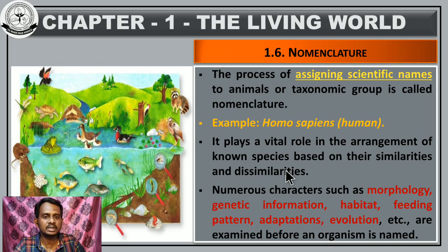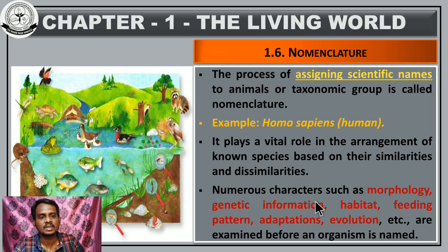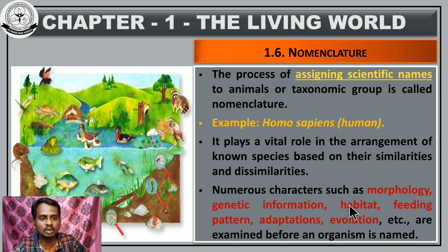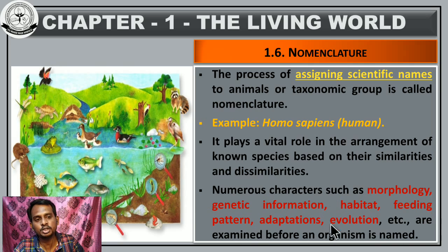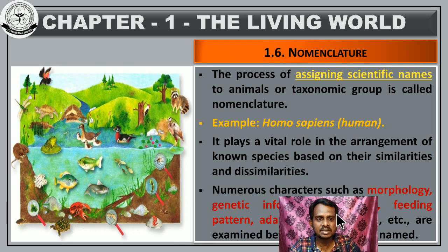What are the characteristic features that should be observed during the naming of organisms? Observe the similarities and dissimilarities, the morphological character of the organism, genetic information of that particular organism, habitat, feeding pattern, adaptation, and evolution. These are all the factors or characteristic features that should be observed during the naming of organisms.